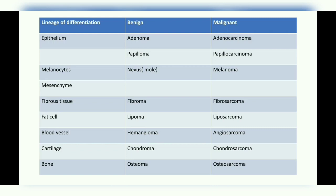Mesenchymal tissue is a connective tissue that includes fibrous tissue, blood vessels, fat, bone, cartilage, etc. A benign tumor of fibrous tissue is called a fibroma, and the malignant tumor of fibrous tissue is called a fibrosarcoma. Always, a malignant tumor of mesenchymal tissue ends with '-sarcoma,' just as carcinoma denotes epithelial origin.